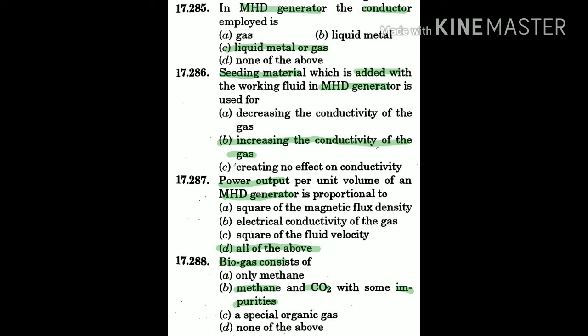Question 286: Seeding material which is added with the working fluid in an MHD generator is used for — the answer is B: increasing the conductivity of the gas.